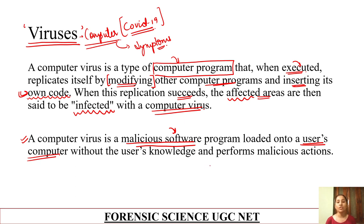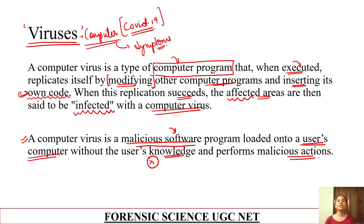This happens with or without the user's knowledge, and with malicious actions. The user's computer is affected without their knowledge because there are malicious intentions. Malicious actions means they are going to create bad outcomes. The user will have no idea that their computer is being compromised by this malicious software.